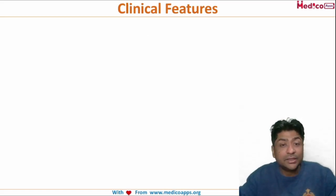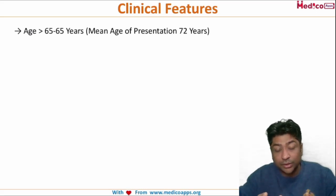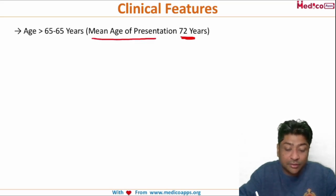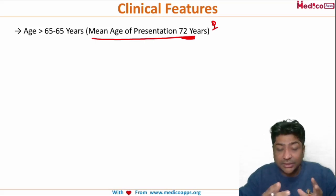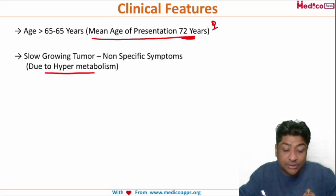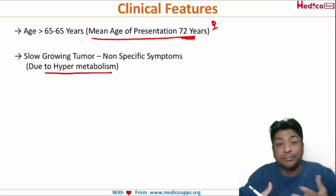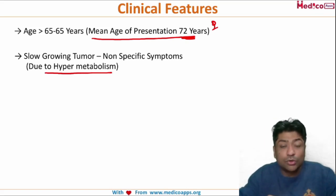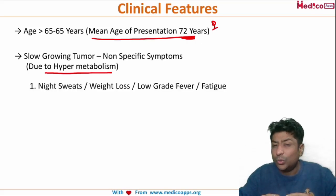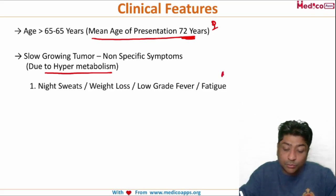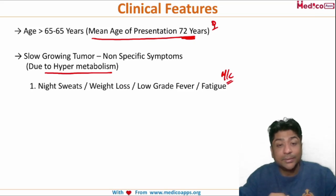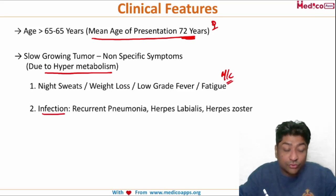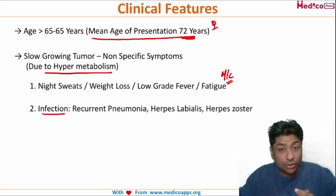CLL typically presents in patients over 65, with a mean age of presentation around 72 years. These slow-growing tumors have non-specific symptoms primarily due to hypermetabolism and increased B-cell turnover. Symptoms include night sweats, weight loss, low-grade fever, and fatigue. Patients may also have a history of recurrent infections, recurrent pneumonia, or activation of herpes zoster or herpes labialis.